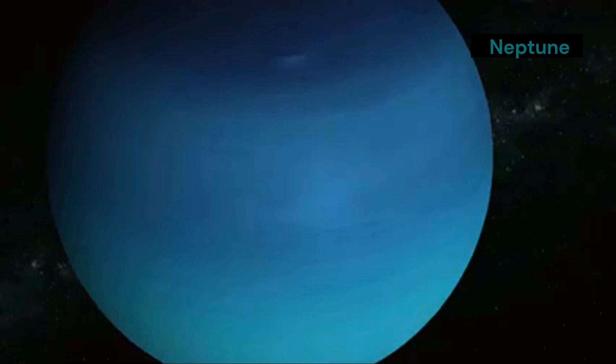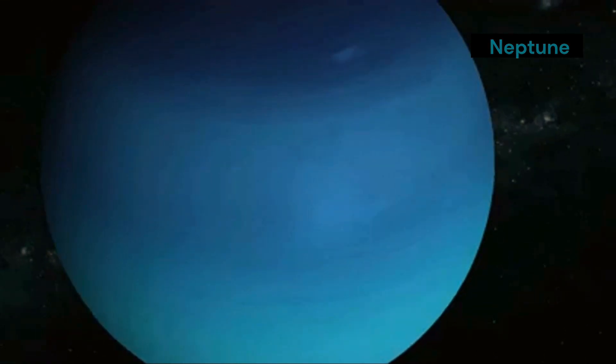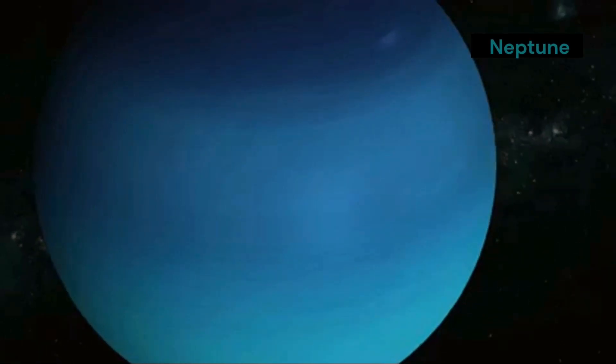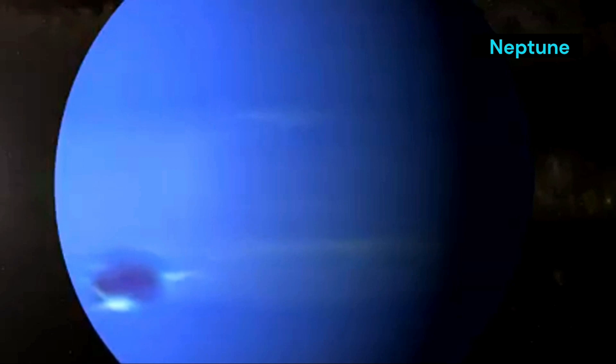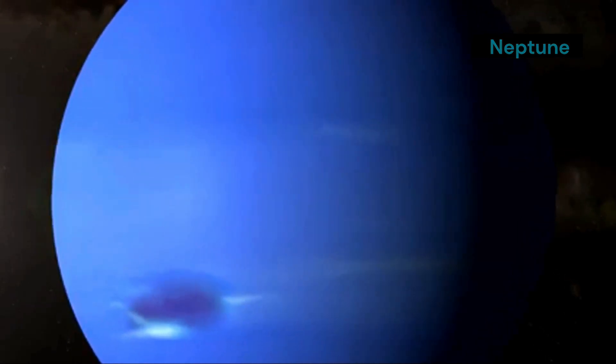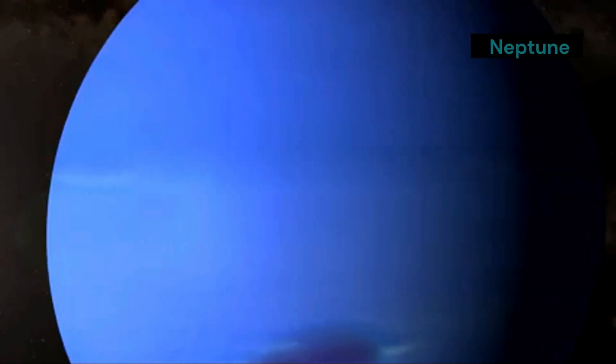Neptune also has a complex and unusual magnetic field, which is tilted relative to its rotation axis. This creates a magnetosphere that is unlike any other in the solar system. Beneath its thick atmosphere, Neptune has a core of rock and metal surrounded by a mantle of water, ammonia, and methane ices. This unique composition makes Neptune a subject of great interest for scientists studying the formation and evolution of planets.